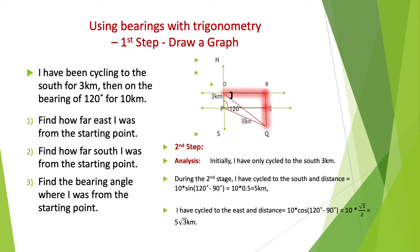When you do a bearing question, the first step is to draw a graph. The graph is displayed on the top right. Starting point is O. OP equals 3 km. PQ equals 10 km. The angle of OPQ equals 120 degrees.